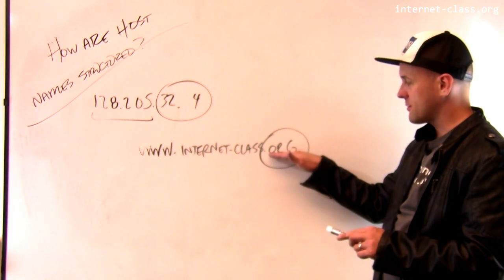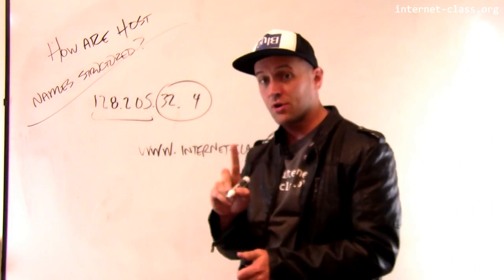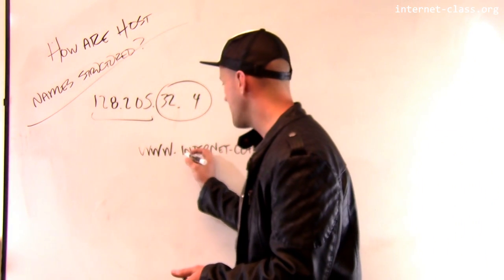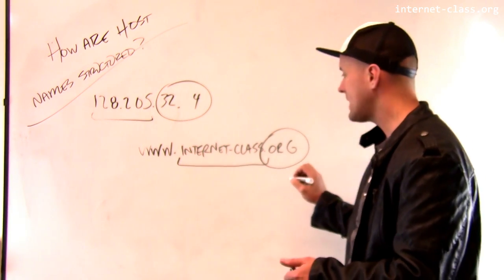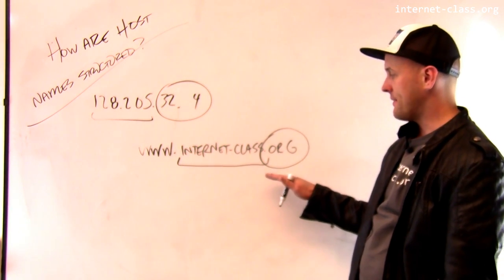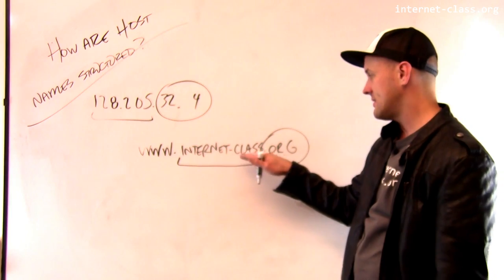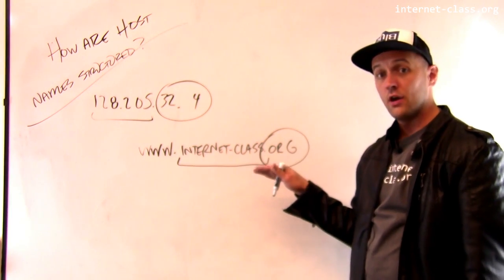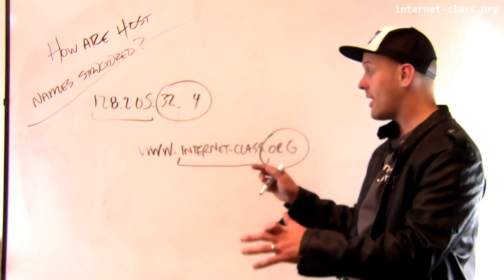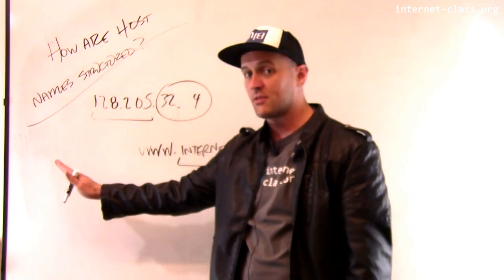So I had to register with this, and then what I purchased was this. So I purchased the right to name anything I wanted to, as long as it ends with .internet-class.org. So I can now essentially own all of the namespace over here.